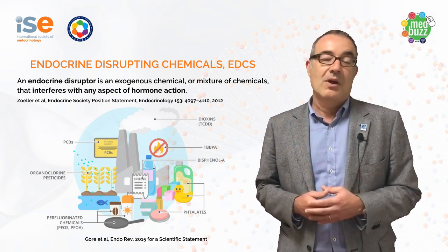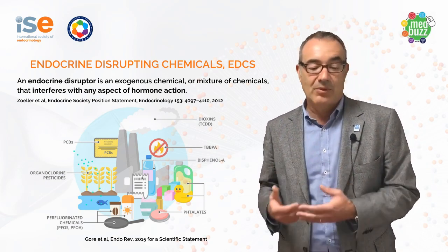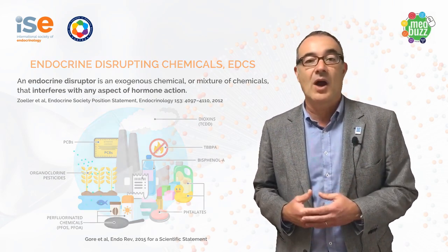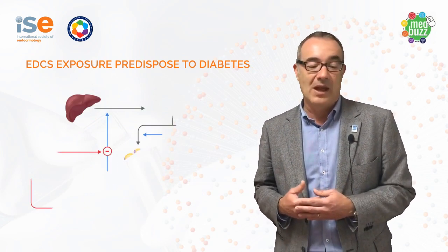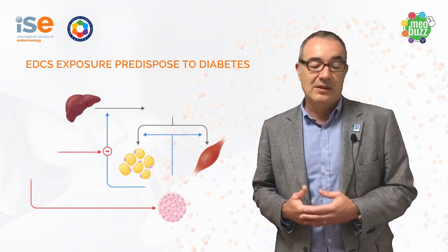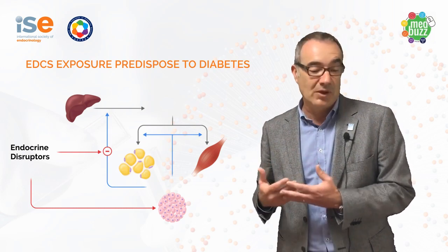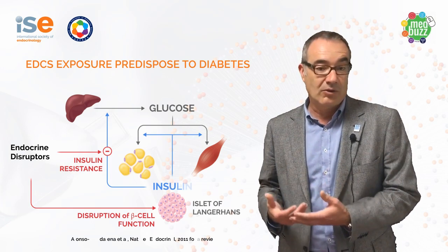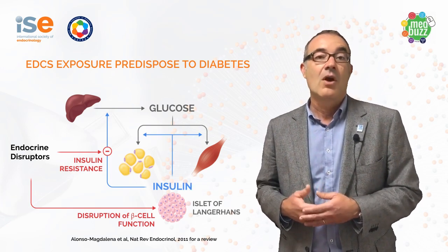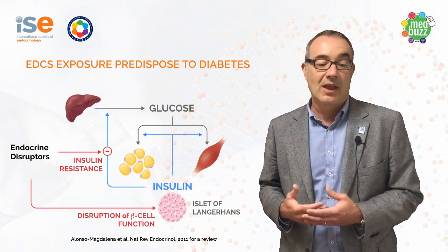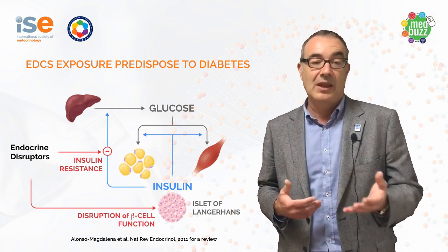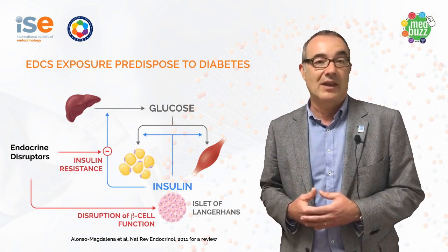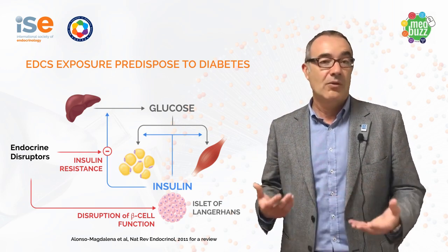How can endocrine disruptors produce type 2 diabetes or predispose us to have diabetes mellitus? It is known that endocrine disruptors can produce insulin resistance in animal models. They can also disrupt pancreatic beta cell function or pancreatic beta cell mass. So they can produce either of them, or they can produce all these effects at the same time.